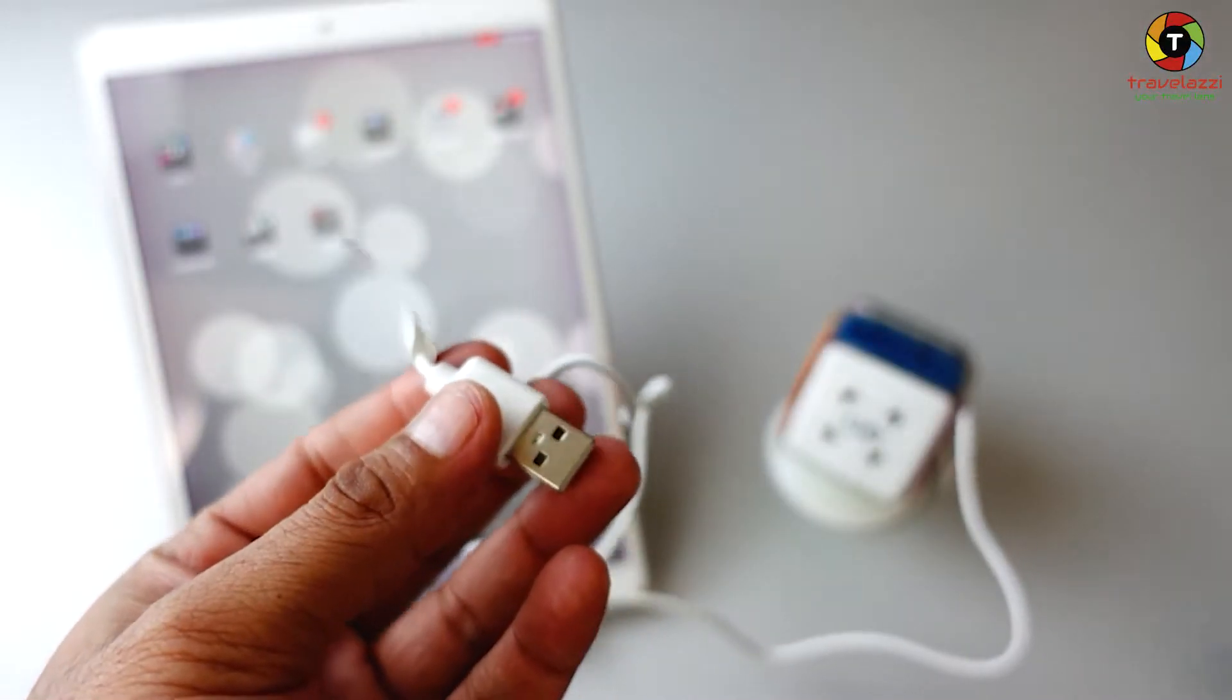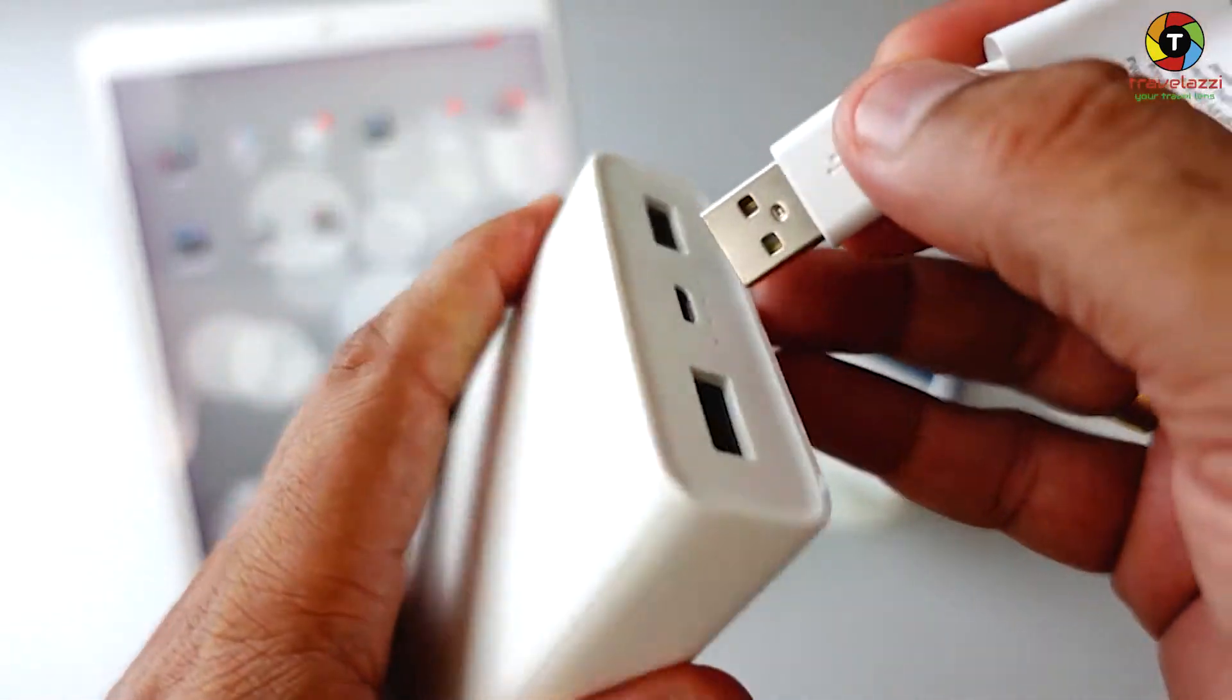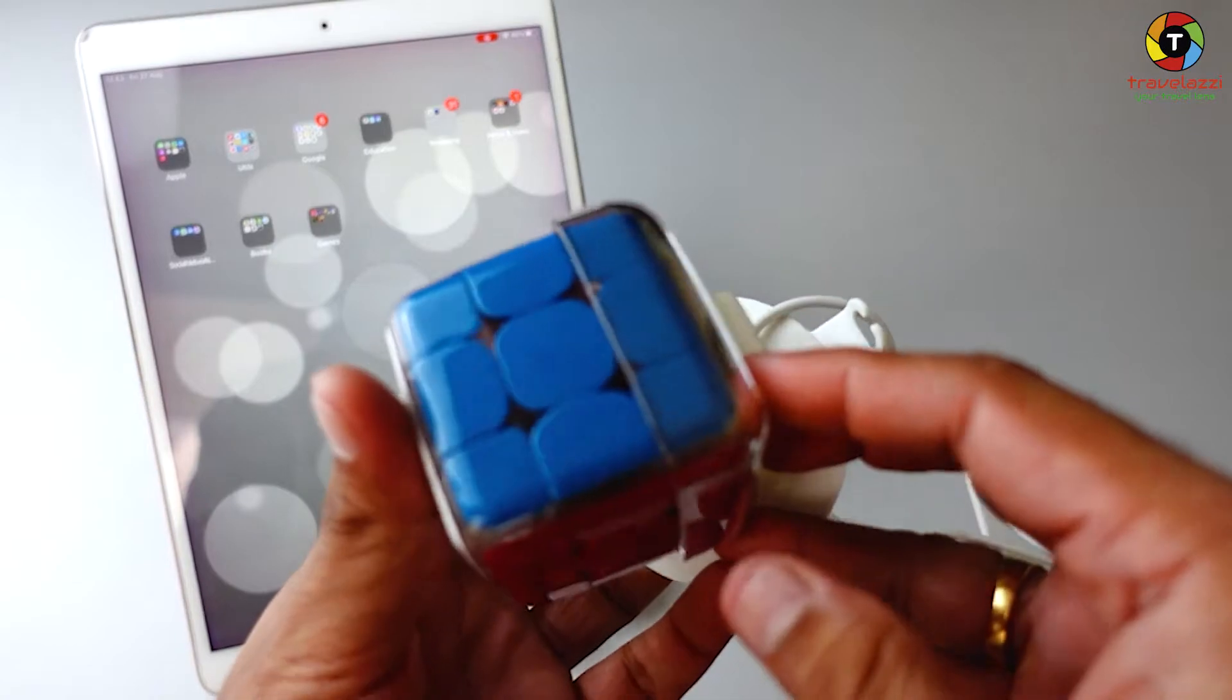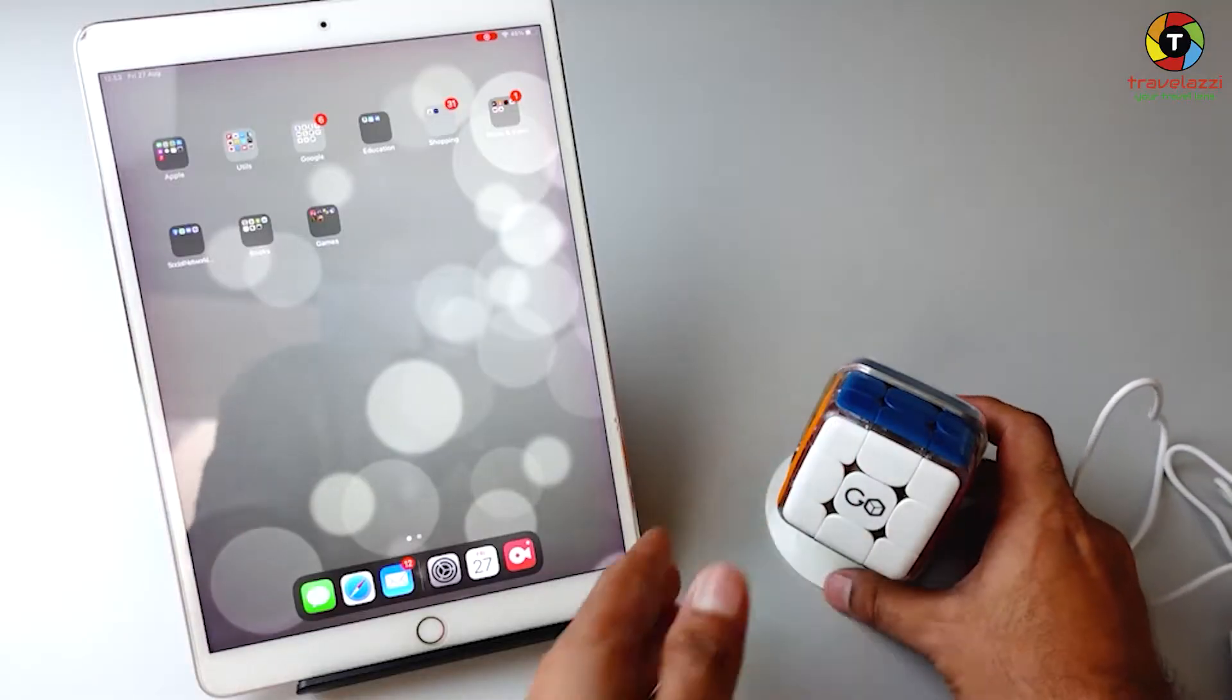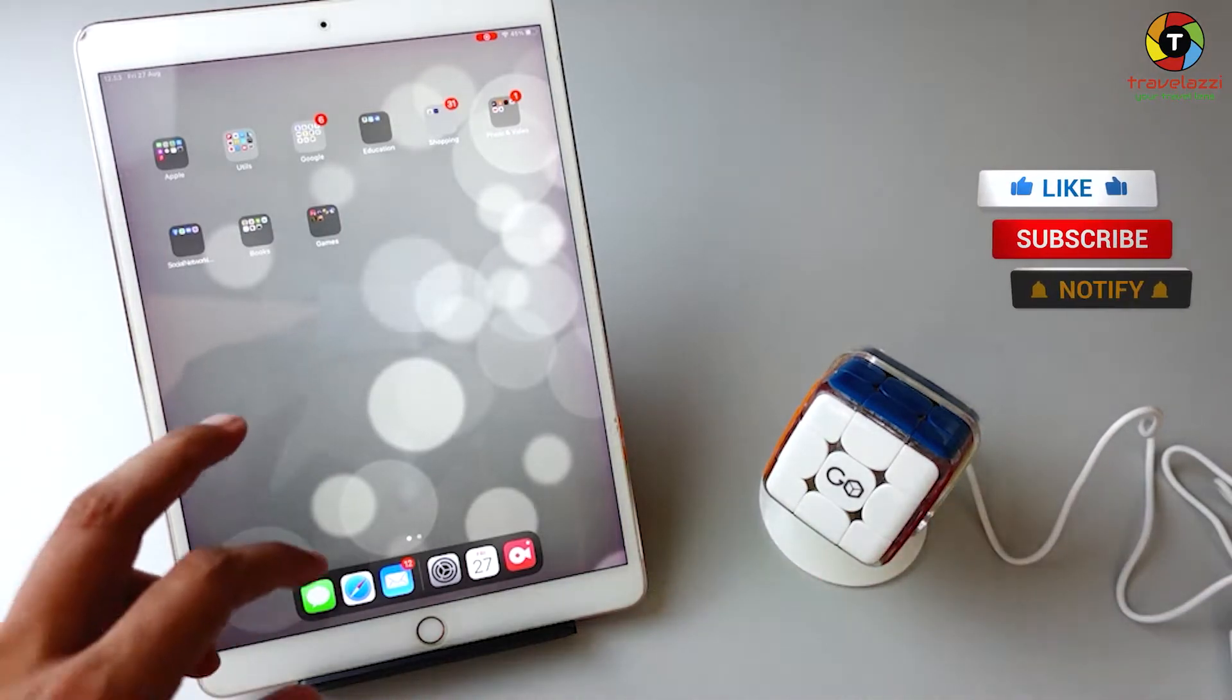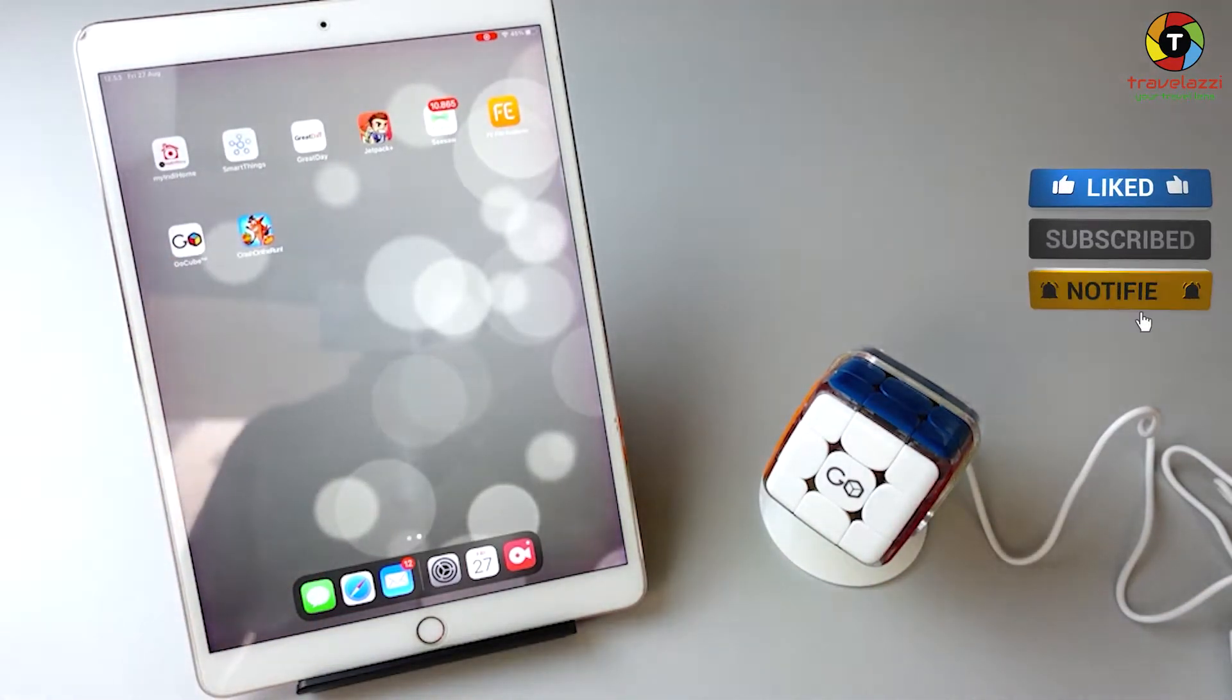The guide says the first thing you have to do is connect it to the charging cable. I'm connecting it with the power bank right now. The LEDs which are built into the cube will start blinking. To start using this device, you have to install an application from the Go Cube company.